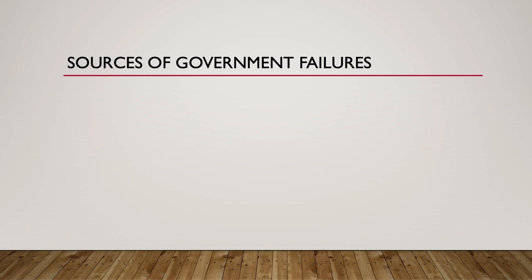Some lags can be reduced by expediting spending already approved for existing programs rather than implementing new programs. Plans that have already been planned and approved are referred to as shovel-ready projects. Government failures also lead to less effective policies and often lead to inefficient outcomes in markets. Let's cover eight sources of government failure, the first being informational problems. Informational problems arise when self-interested constituents intentionally overstate or understate the value of public goods or of externalities in markets, causing policy makers to make planning decisions based on inaccurate information.